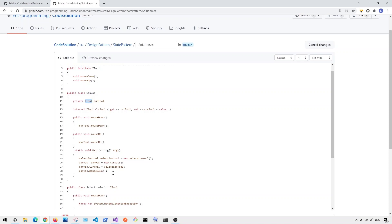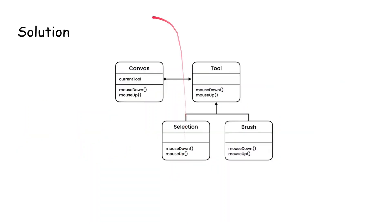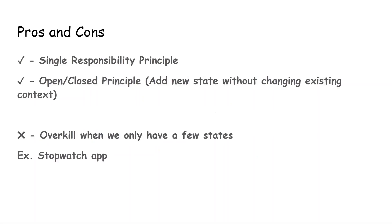There are pros and cons to using this design pattern. One pro is the single responsibility principle — each class has only one responsibility. Another is the open/close principle, meaning we can add new states without changing the existing context. If we want to add a new feature like circle or eraser, we don't have to change anything inside the canvas class, but we can still add and extend new features.